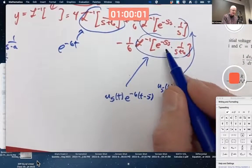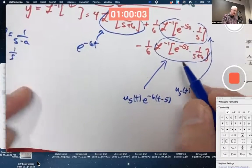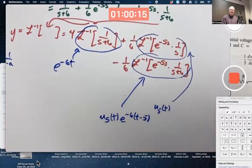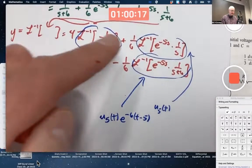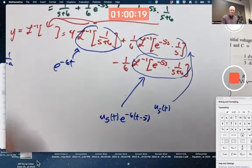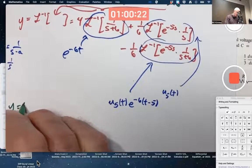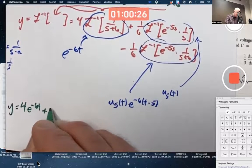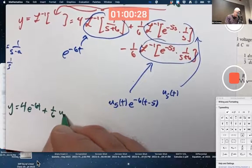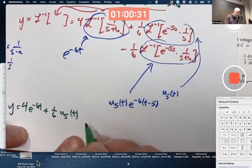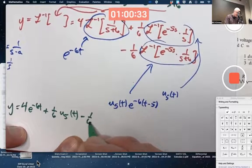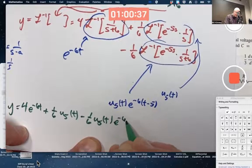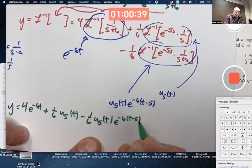Final answer, I got to not forget to multiply by the 4, the one-sixth, and the negative one-sixth. Final answer for y is 4e to the negative 6t plus one-sixth u5 of t minus one-sixth u5 of t, e to the negative 6 times in parentheses t minus 5. Is the unique solution of the initial value problem.